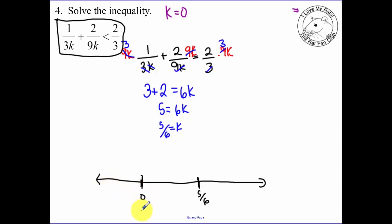A number less than 0. I'm going to test negative 1. So if I plug in negative 1, I get negative 1 third minus 2 ninths less than 2 thirds. I don't even care what that number is. I just care whether or not it's true or false. I know that this left side is going to be negative. And a negative is always going to be less than a positive. So I know that that's true. I know part of my answer is k is less than 0.